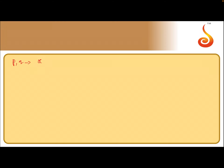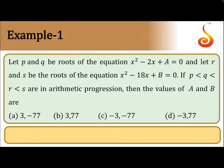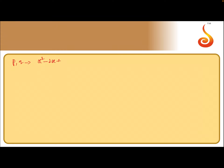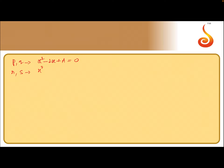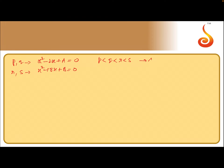p, q are the roots of the equation x² - 2x + a = 0, and r, s are the roots of the equation x² - 18x + b = 0. We are given that p < q < r < s, which are in arithmetic progression.